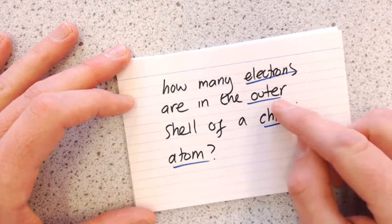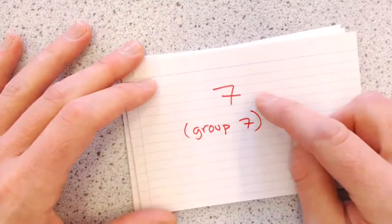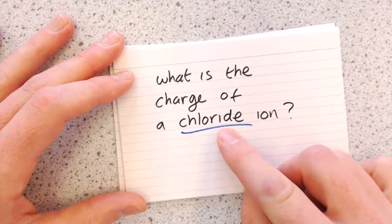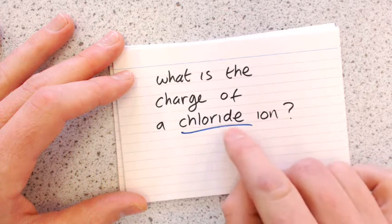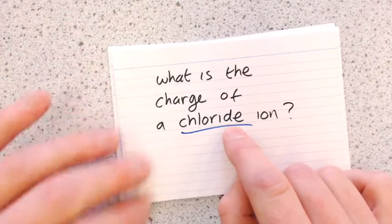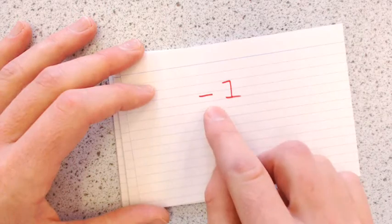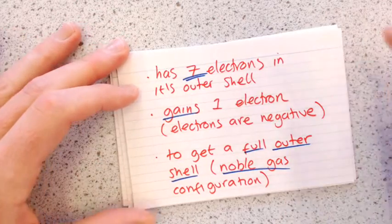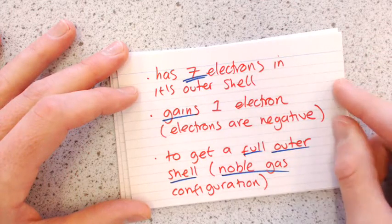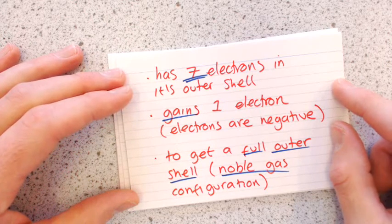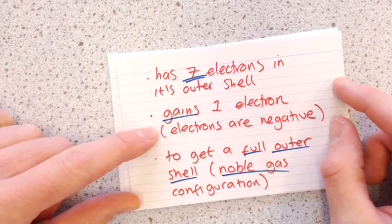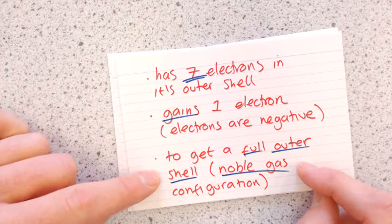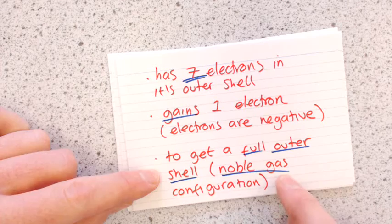How many electrons are in the outer shell of a chlorine atom? Seven — chlorine is in group seven. So what's the charge of a chloride ion? It's minus one. Note that for non-metals, when forming an ion, you chop off the ending and add '-ide'. Chlorine has seven outer electrons; to get a full outer shell of eight it gains one electron. Since electrons are negative, it becomes minus one — gaining that electron to achieve a noble gas configuration, just like sodium did.